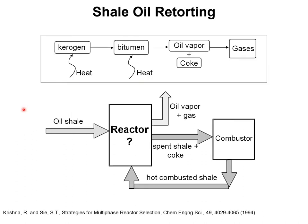Let's consider shale oil cracking as analogous to the visbreaking process. The recovery of oil from shale is essentially a thermal cracking process. The kerogen, which is the precursor for the oil, when subject to heat produces bitumen. Further heating of the bitumen results in an oil vapor, and coke gets deposited on the shale. If further heated, the oil may over-crack to produce light gases.